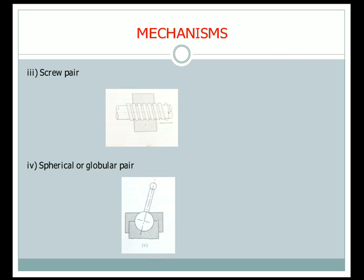Next is the screw pair. In a screw pair, A has screw threads and is placed inside B, where the inner diameter of B also has screw threads. We can rotate A with respect to B, and when A is rotated it will move in the longitudinal direction — that is, in a to-and-fro direction. We cannot separate links A and B.